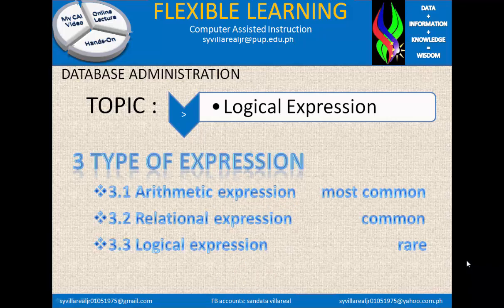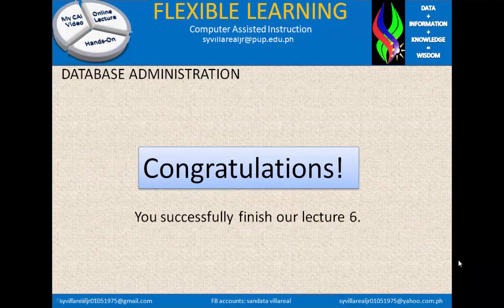We will now finish with the three types of expressions. The first is the arithmetic expression, which is the most commonly used. The next is the relational expression, which is considered to be a comparison and is commonly used. And the last is the logical expression, which is very rare in terms of use in computing. Congratulations — you have successfully finished Lecture 6.